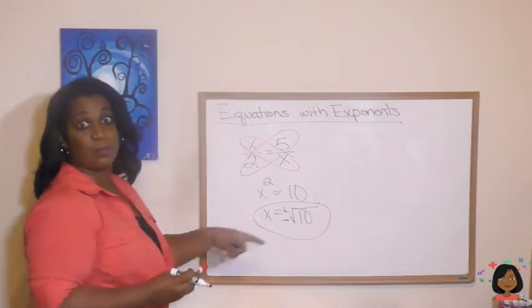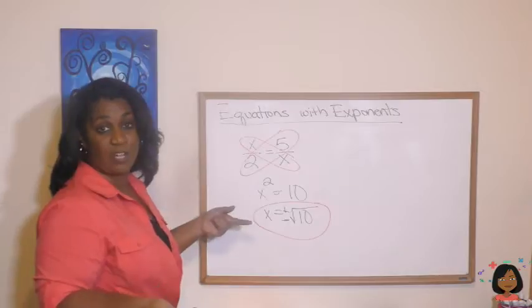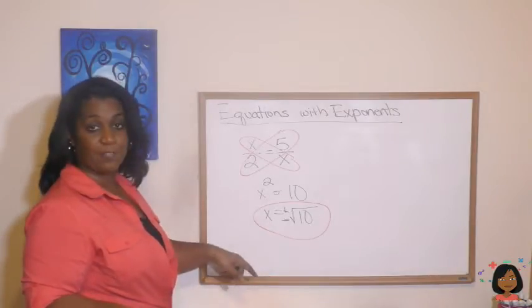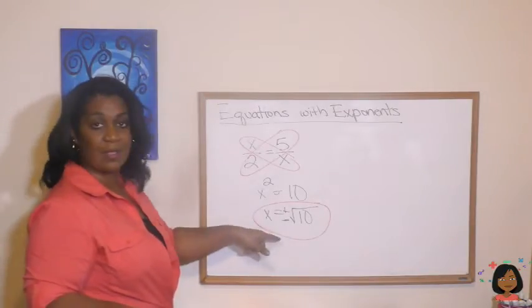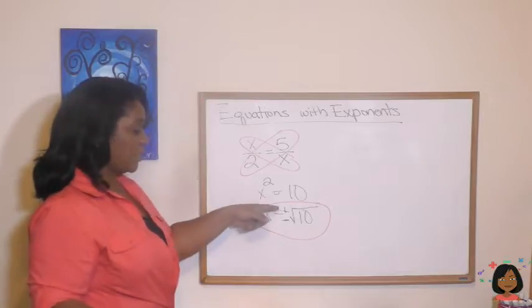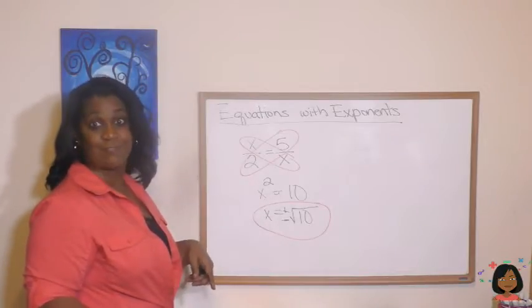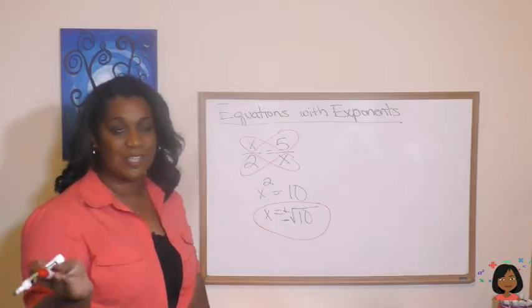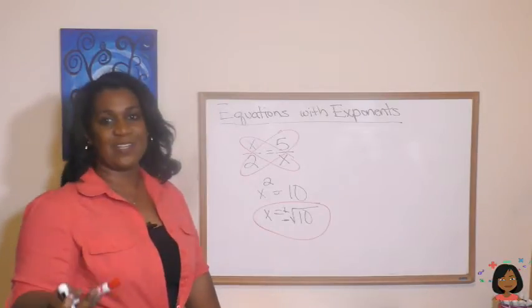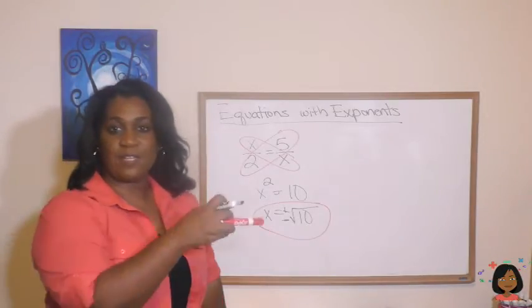So I want you to know that it's not always just a perfect square you're going to get for your answer. If you don't get a perfect square, we just leave it under the radical, but make sure you mark it positive and negative.